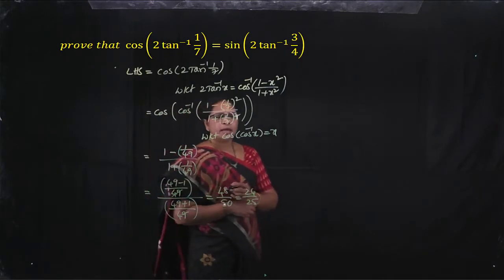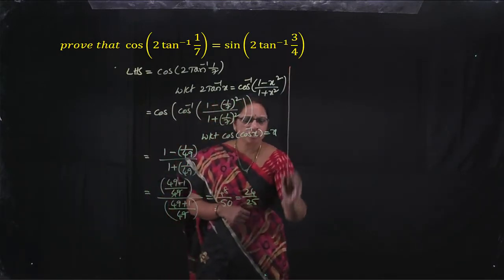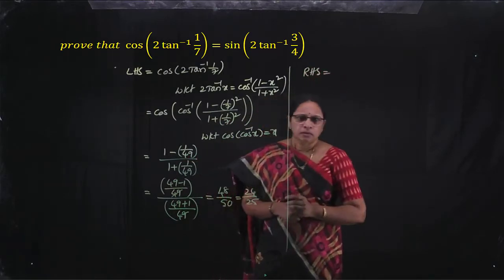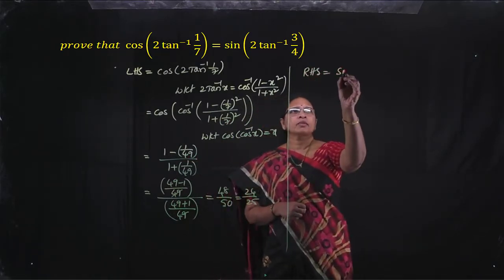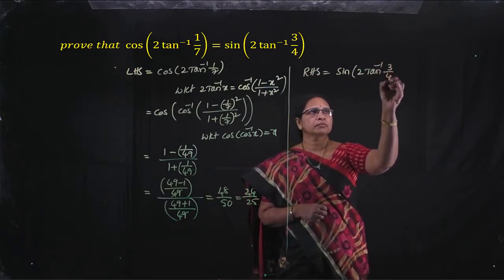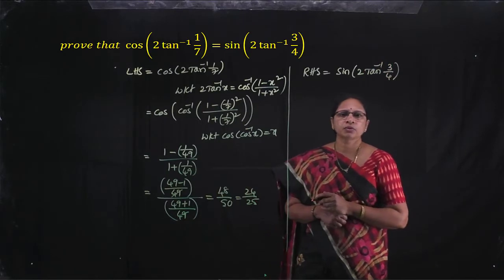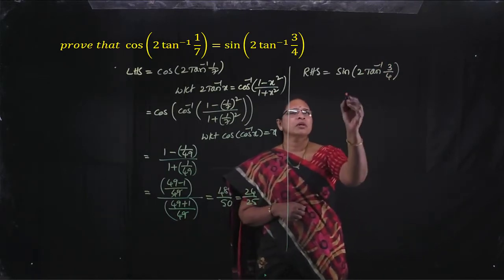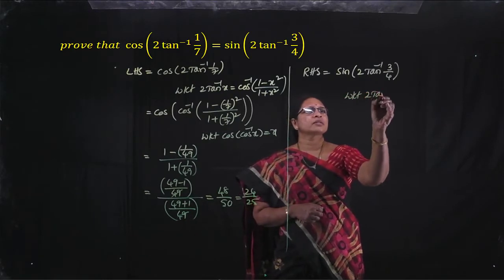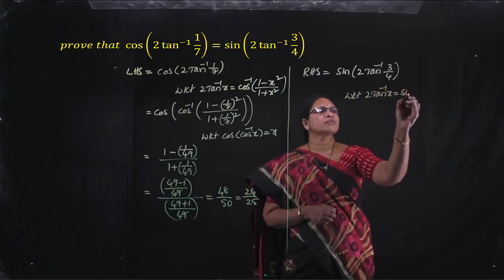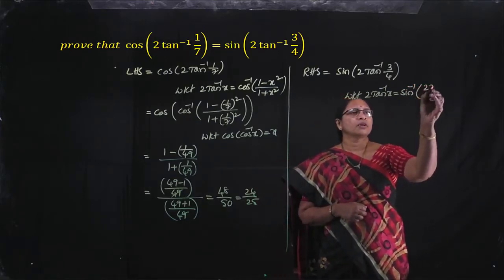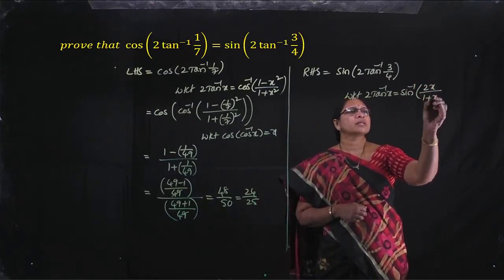Now take the RHS part of this problem. RHS is sin of 2 tan inverse 3 by 4. We know sin of 2 tan inverse x in terms of sin inverse is sin inverse of 2x by 1 plus x square.